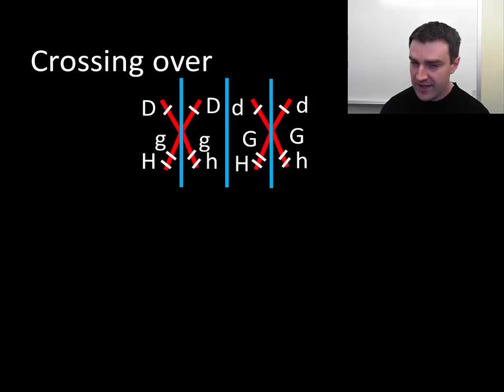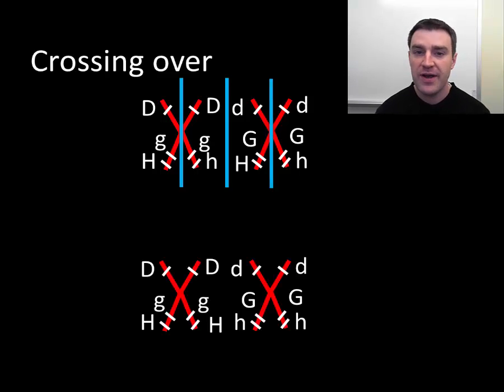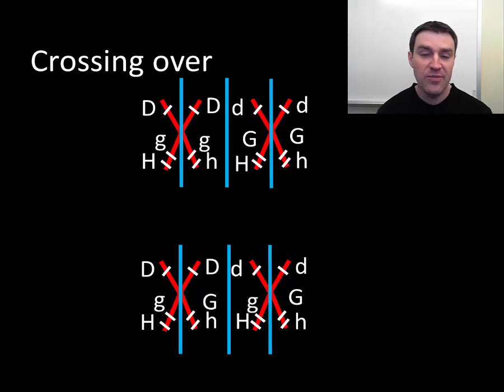Sometimes it's kind of random how much of the tips exchange. If I were to show perhaps crossing over again, maybe these two homologous pairs are brought together and more of the tips overlap and more of the genes or alleles switch, then perhaps I get even more different results.